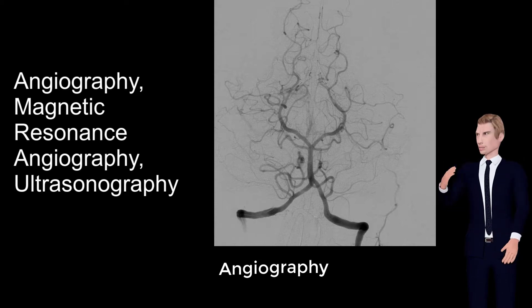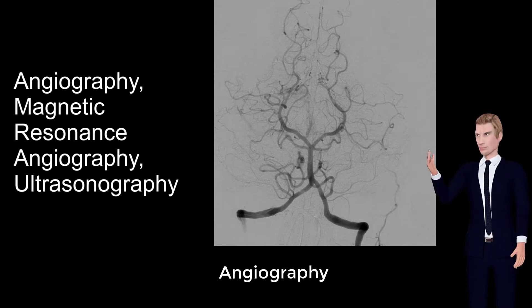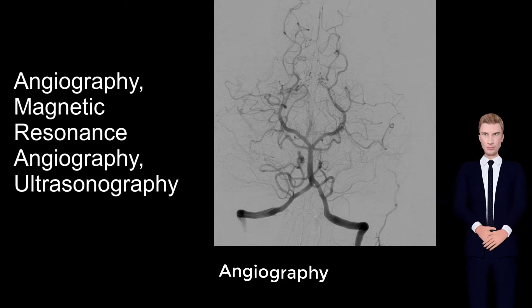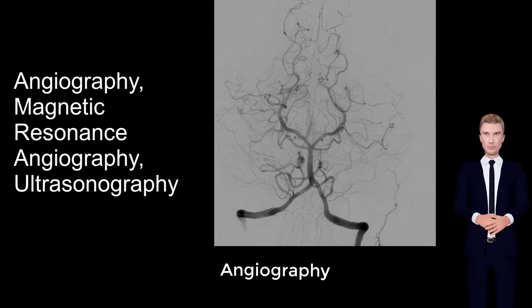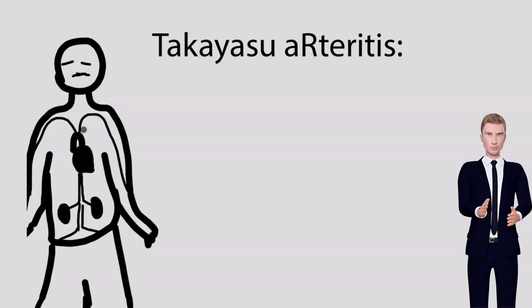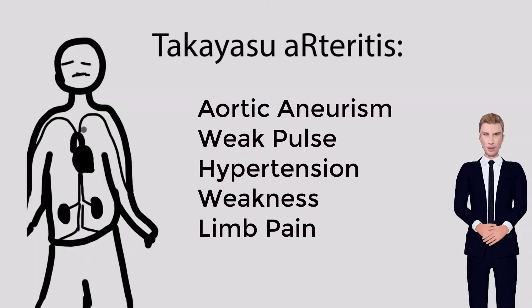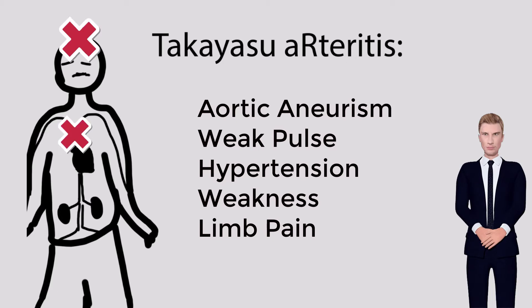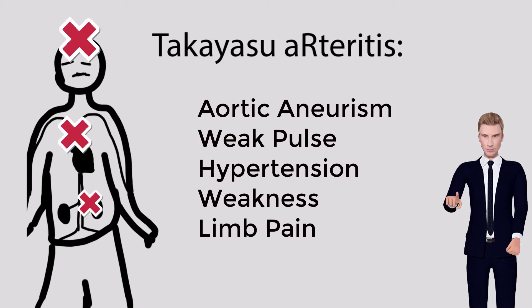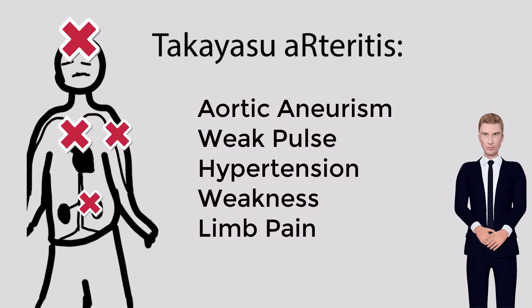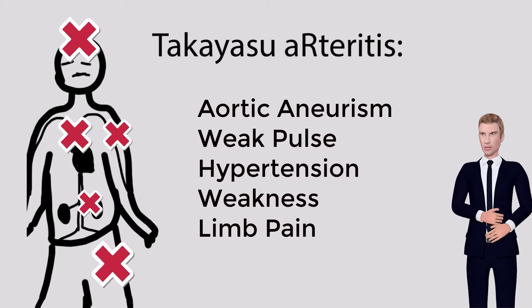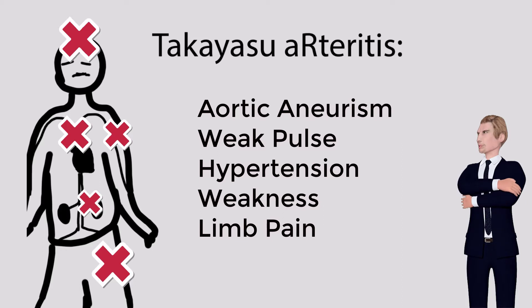Arteritis may be primary or secondary to some other disease process. The primary types include Takayasu arteritis, also known as aortic arch syndrome and pulseless disease, which affects large vessels including the aorta and arch branches.